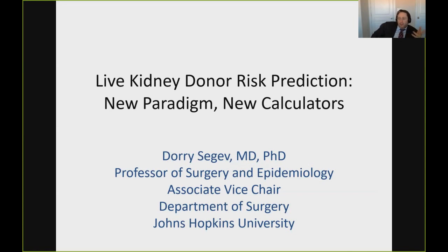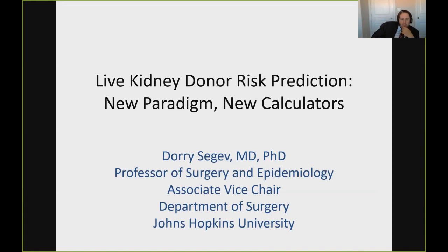Answering these questions is not easy. For baseline risk, ideally we'd look at people cleared to donate who then didn't donate and follow them for many years, but that's a very small number. Instead, we've taken inferences from healthy non-donors. To understand absolute risk, we study donors. And if we subtract post-donation risk minus the risk in healthy non-donors, we get the extra risk from donating. The problem is these are rare events — ESRD and death after donation are very rare — meaning we need thousands of donors to see one event, and tens of thousands to estimate risk with confidence.